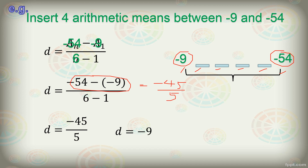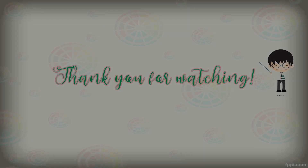Using this value to insert the missing numbers: negative 9 plus negative 9 gives negative 18, negative 18 plus negative 9 is negative 27, plus negative 9 is negative 36, plus negative 9 is negative 45. Continuing, negative 45 plus negative 9 gives exactly negative 54. That's how we insert more than one arithmetic mean. Thank you for watching.